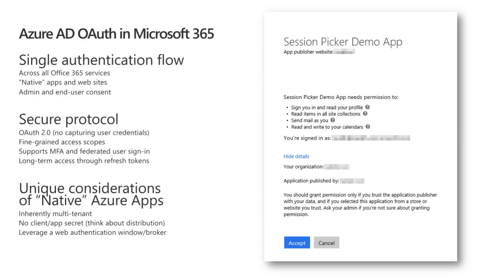The Microsoft Graph leverages Azure Active Directory, or Azure AD, like so many other cloud services from Microsoft. This provides authentication and authorization capabilities for our applications. You can create web apps as well as native apps with Azure AD. Users can authorize the application using delegated consent where they grant the application to act on their behalf. Global tenant admins can also grant consent to all users — that's called admin consent.